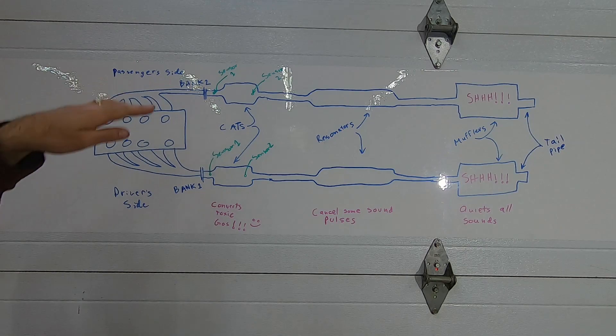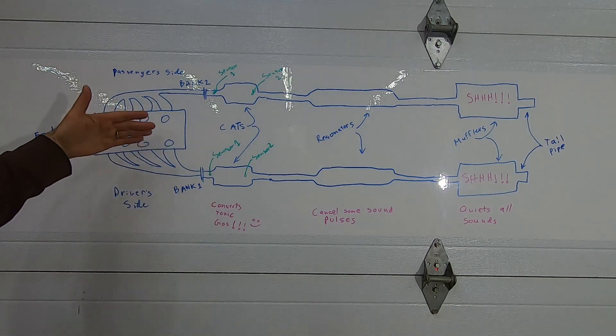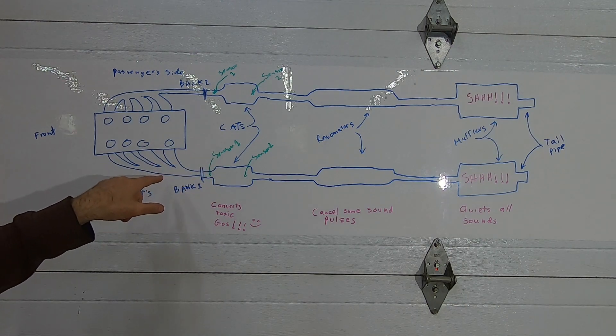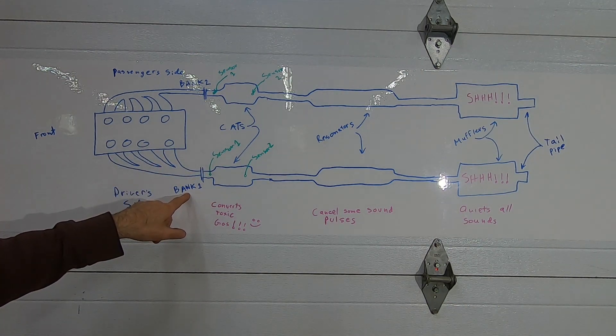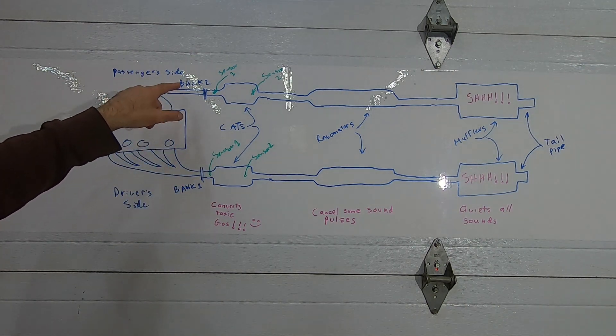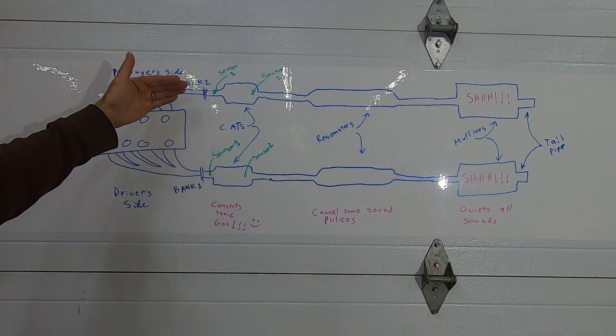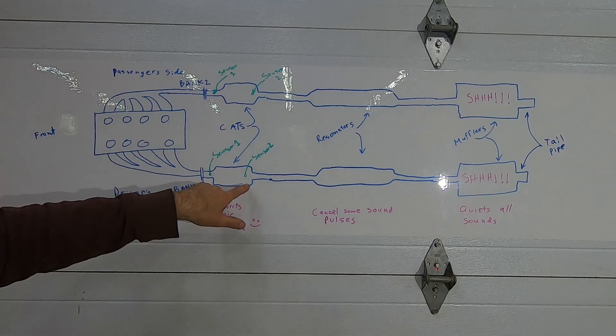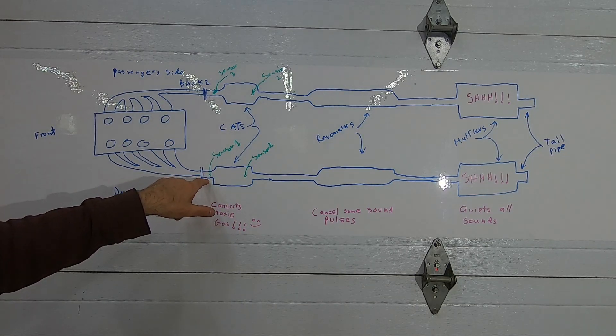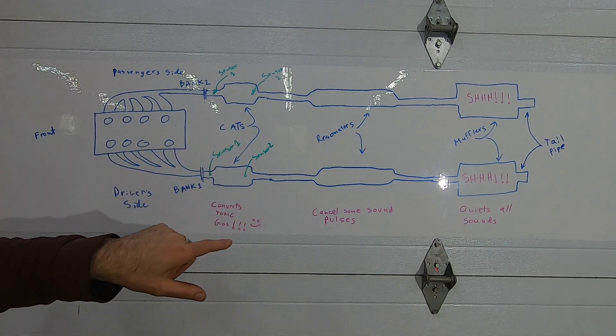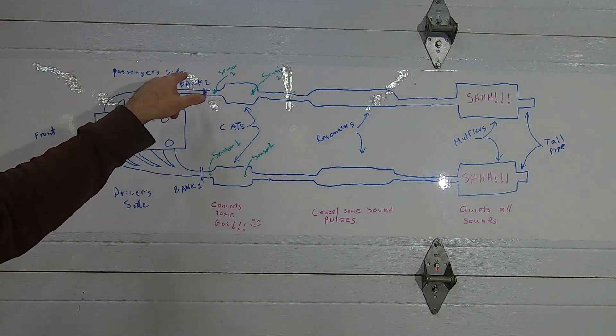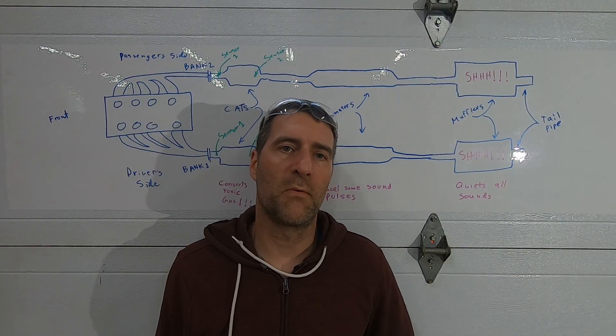I do want to talk about bank one versus bank two. A bank refers to a side of an engine that has one exhaust manifold. On the driver's side that's traditionally called bank one, and on the passenger side that's traditionally called bank two. For a V8 for example, usually you have a sensor up in front of the catalytic converter and behind the catalytic converter, so you have bank one sensor one, bank one sensor two, bank two sensor one, bank two sensor two.